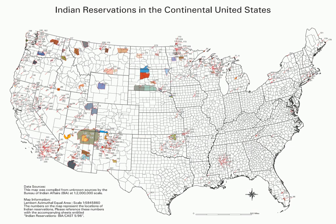In addition, because of past land allotments leading to some sales to non-Native Americans, some reservations are severely fragmented, with each piece of tribal, individual, and privately held land being a separate enclave. This jumble of private and public real estate creates significant administrative, political, and legal difficulties. The collective geographical area of all reservations is 56,200,000 acres (22,700,000 hectares),